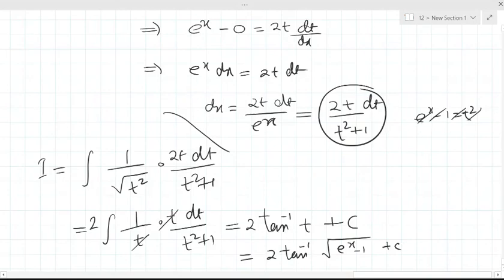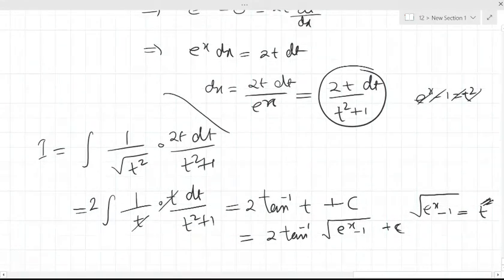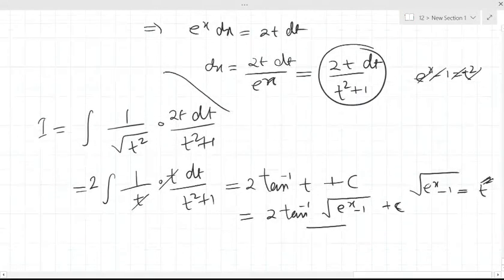Because we have substituted e to the power x minus 1 is equal to t square. Therefore, value of t will be root over e to the power x minus 1. We shall not use plus minus, we shall use only plus. So this is the integration of 1 upon root over e to the power x minus 1. Okay? Is everybody comfortable?